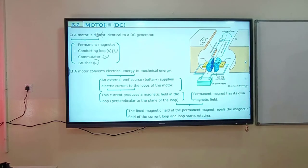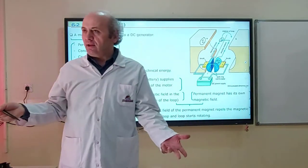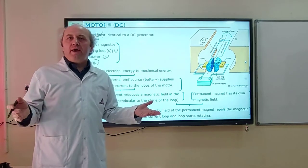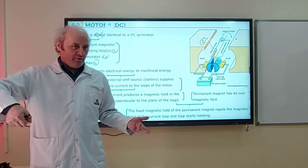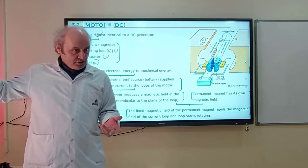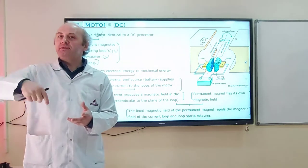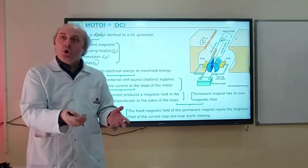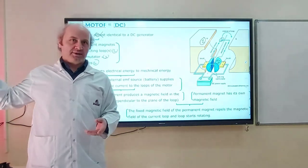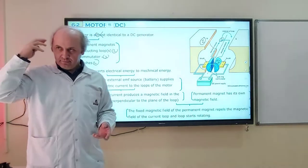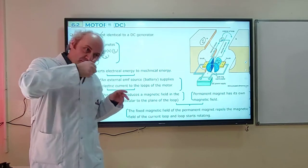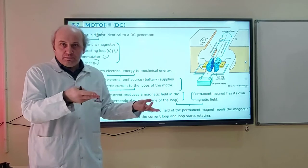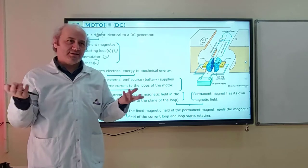A motor converts electrical energy to mechanical energy. You plug the motor into electricity, switch it on, and it will start rotating — that's mechanical energy. Everything in your house which rotates by electricity is a motor. For example, a mixer: you push a button, it gets electrical energy and starts rotating, producing rotational kinetic energy which is mechanical energy. Or an air driver — you plug it in, push a button, it starts blowing. Similarly, a washing machine: plug it in, switch on, it starts rotating. All are electric motors.